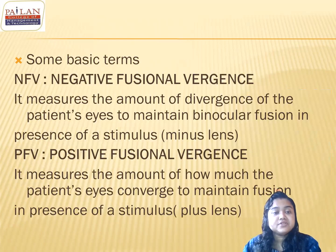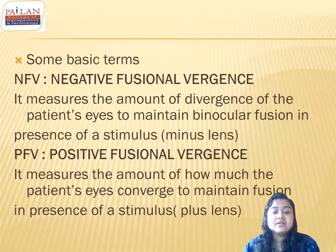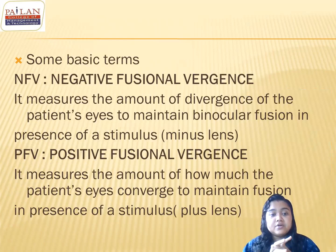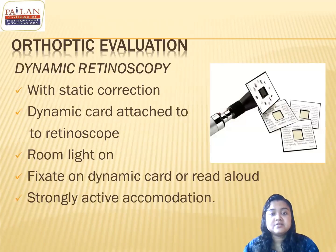The negative functional vergences measure the amount of divergence the patient can exert to maintain binocular vision — you are relaxing the amount of accommodation. The positive functional vergences measure the amount of convergence in the patient.